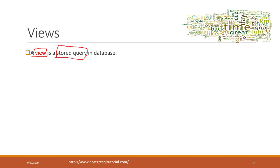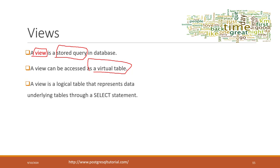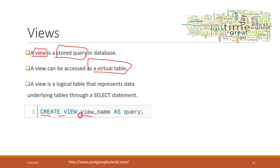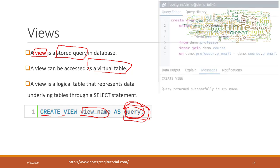The view does not store the data itself - it just stores the query. Next time you can just run that query as a view and you will have the same result. A view can be accessed as a virtual table, so you can call it as a table and also do SELECT statements etc. The syntax of creating a view is very simple: CREATE VIEW, then you give it a view name just like you give a table a name, and then you define the query.